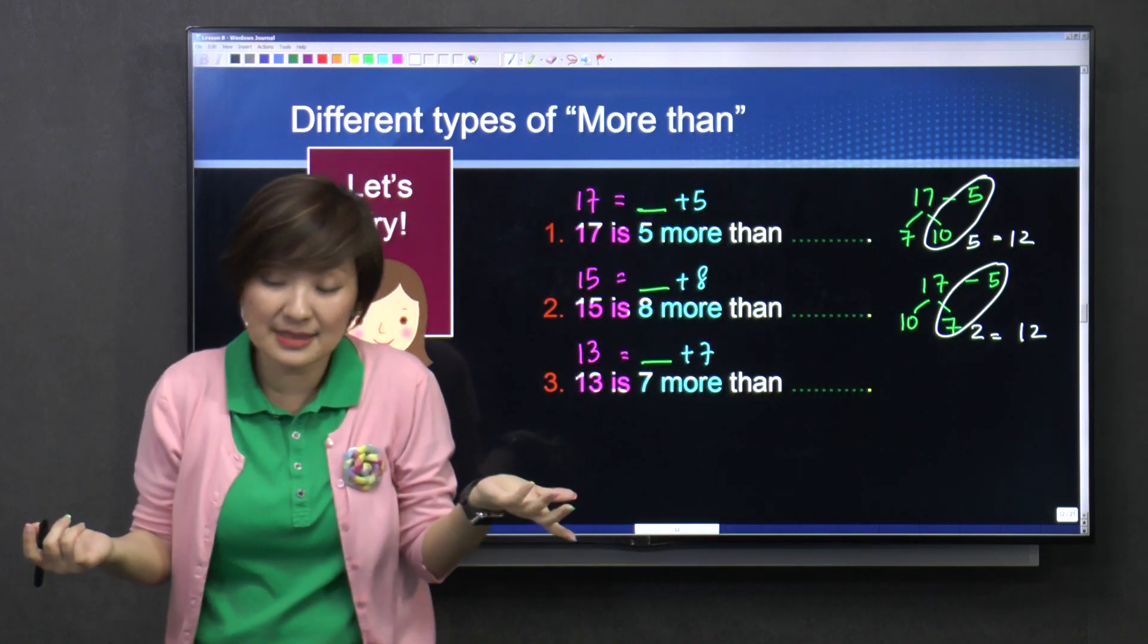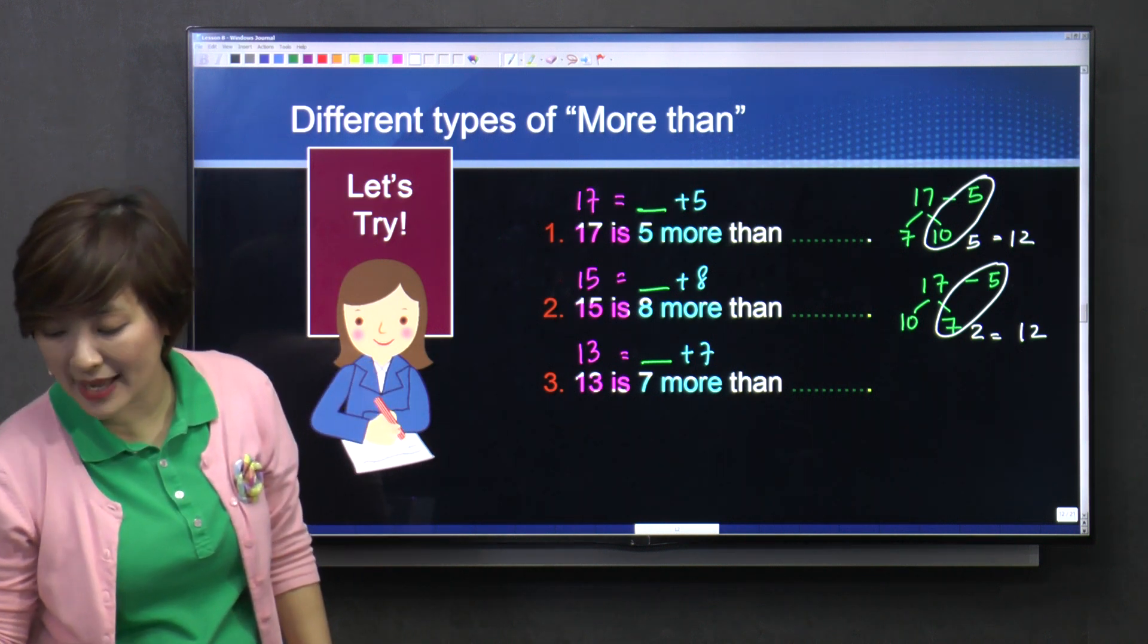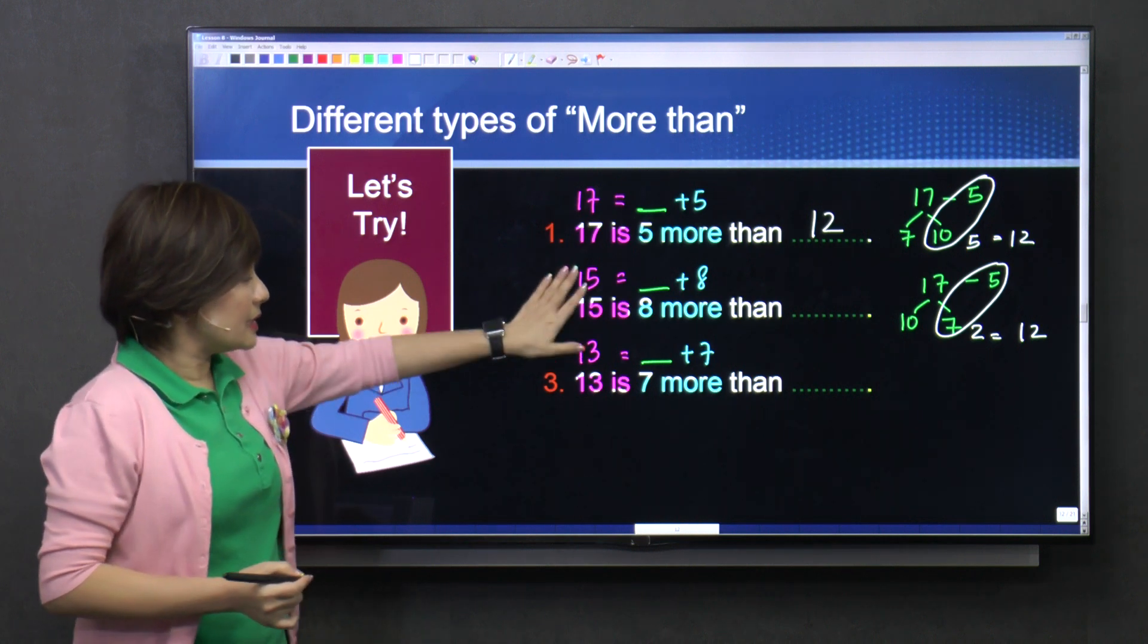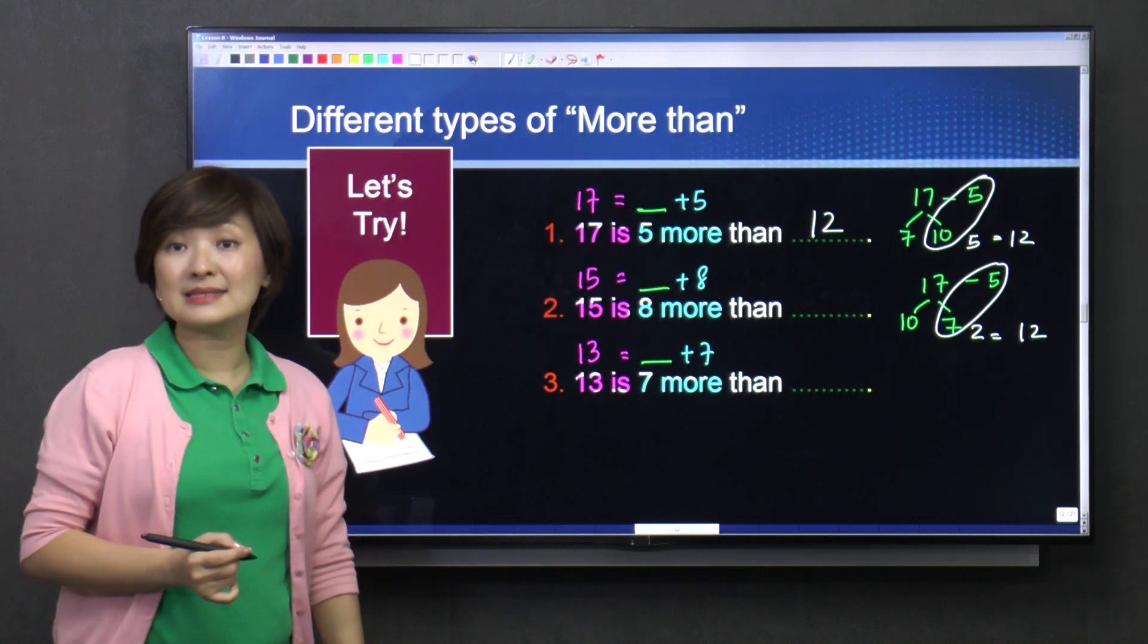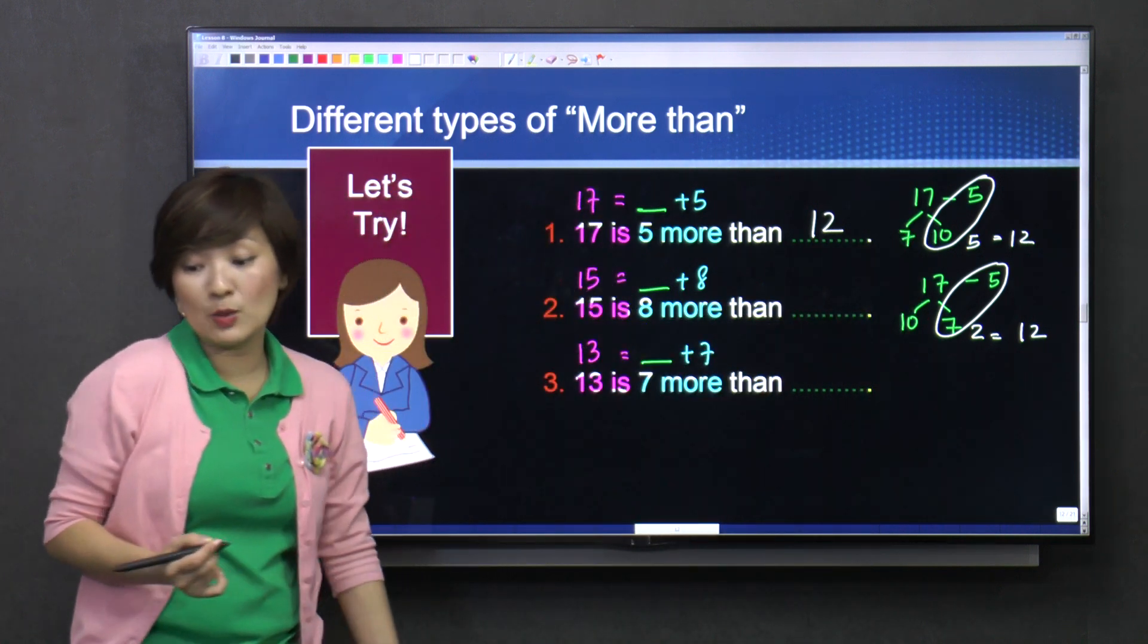Okay, after all, the answer is still twelve. So, seventeen is five more than twelve. Okay, now fifteen is equals to what plus eight? You might want to try this method to see if it works for you. It's good to practice.